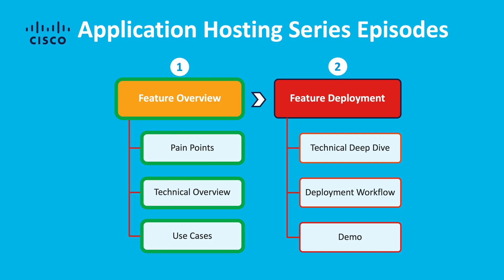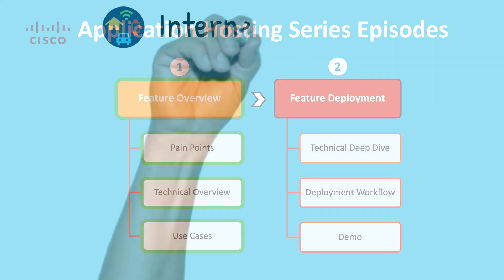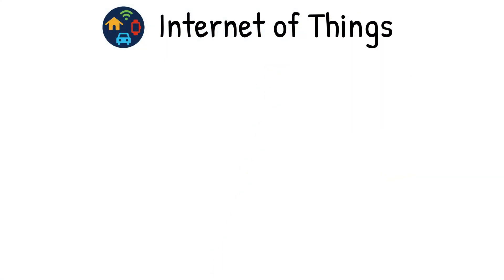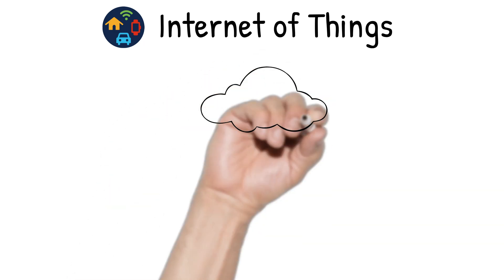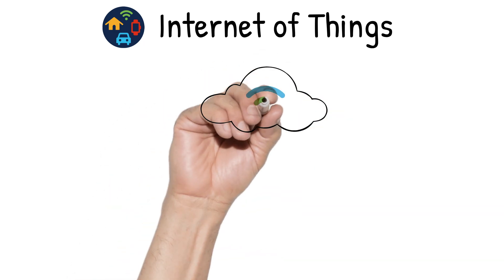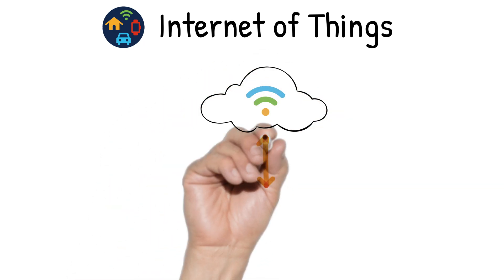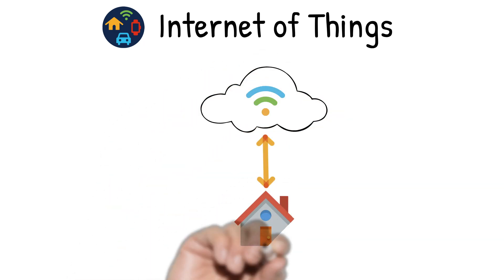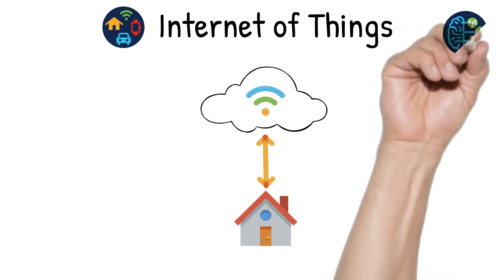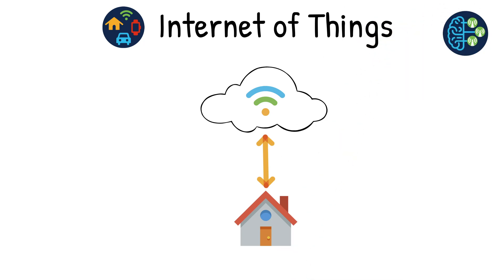To get started, let me provide you with a background on what the Internet of Things really means. The Internet of Things, otherwise known as IoT, can be described as the ability to leverage a wireless network to monitor and transfer data through smart devices automatically and, most importantly, without human interaction.